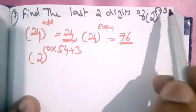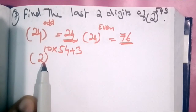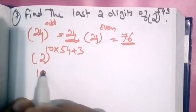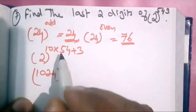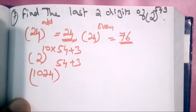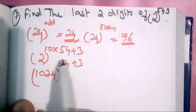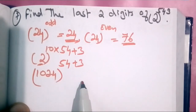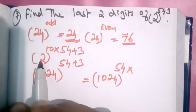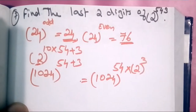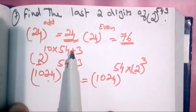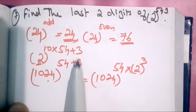2 raised to 543 — we simplify this as 2 raised to 10 times 54. 2 raised to 10 is 54 out of 24, so it is 5 out of 24, up to 4. We get 4 out of 24, which gives 154 into 2 raised to 3, equal to 10 times 54 plus 3.